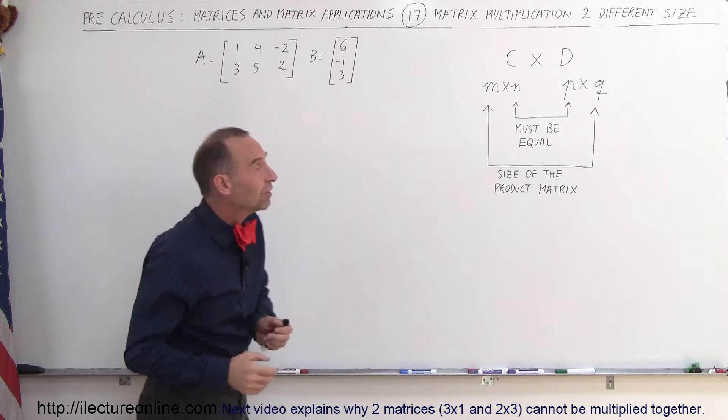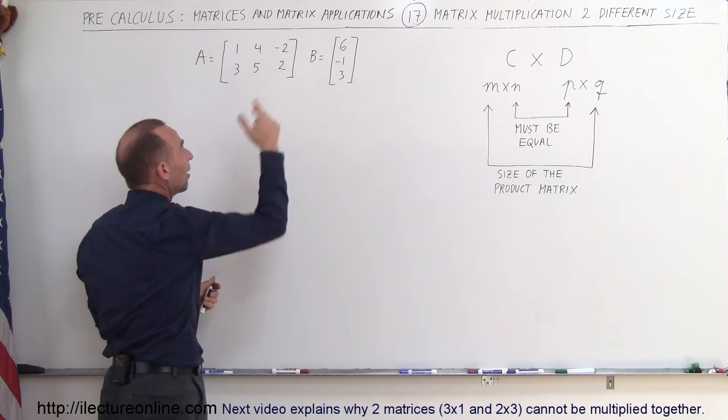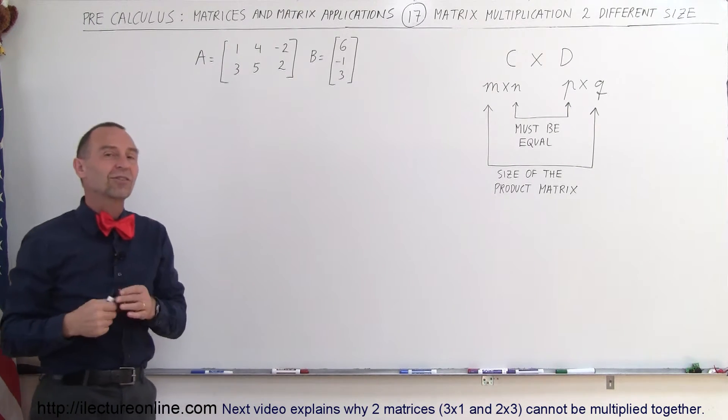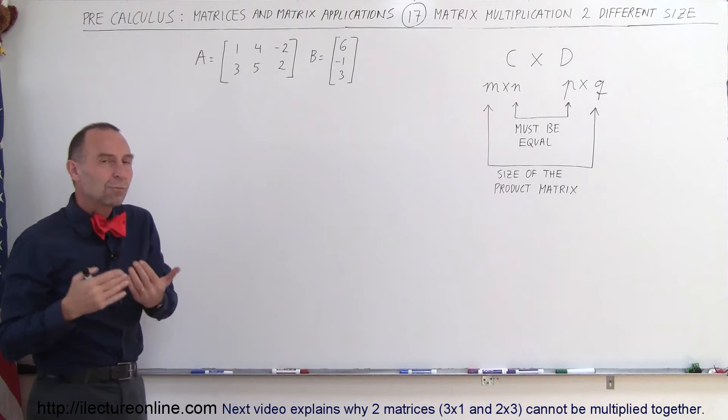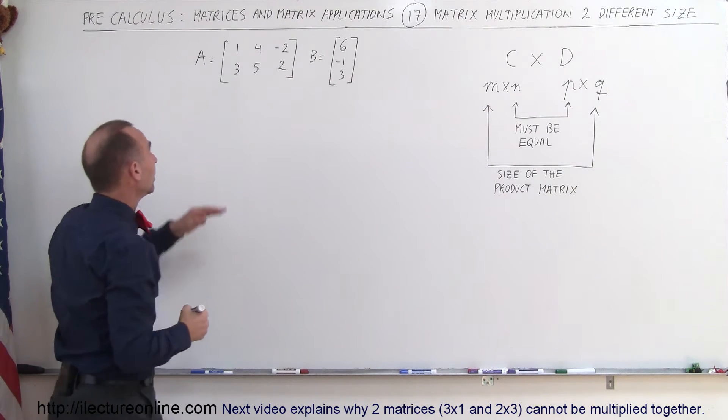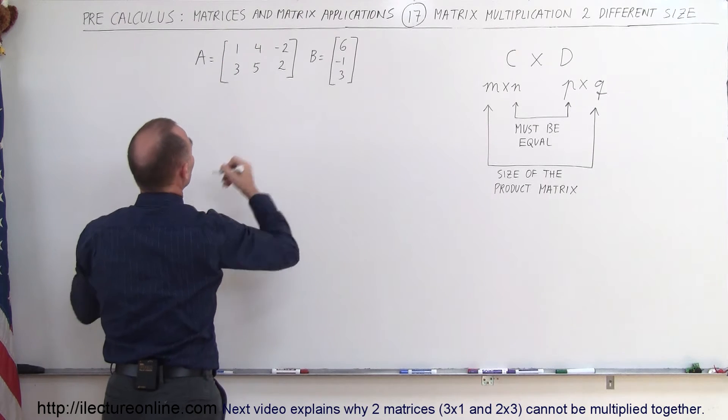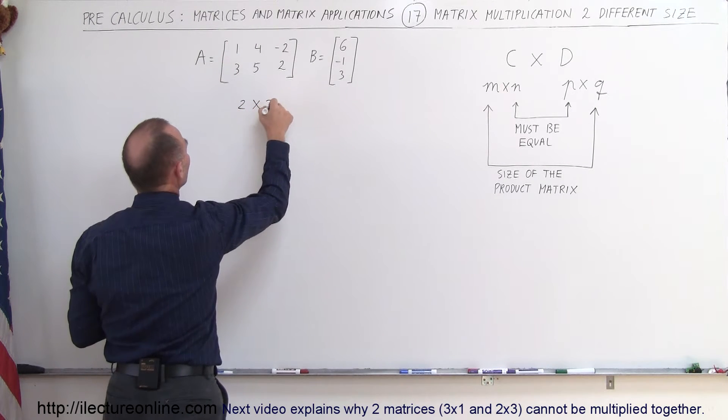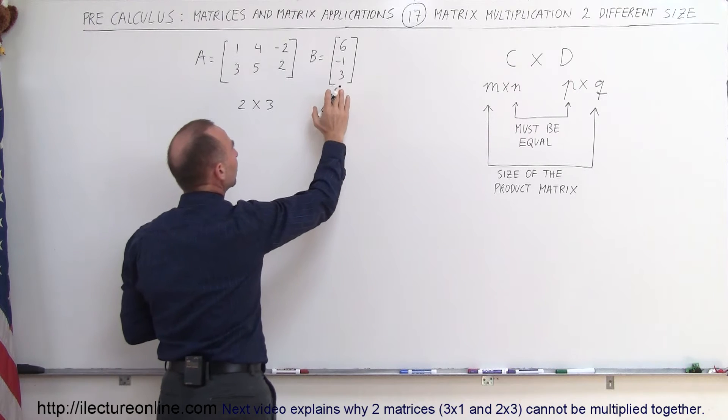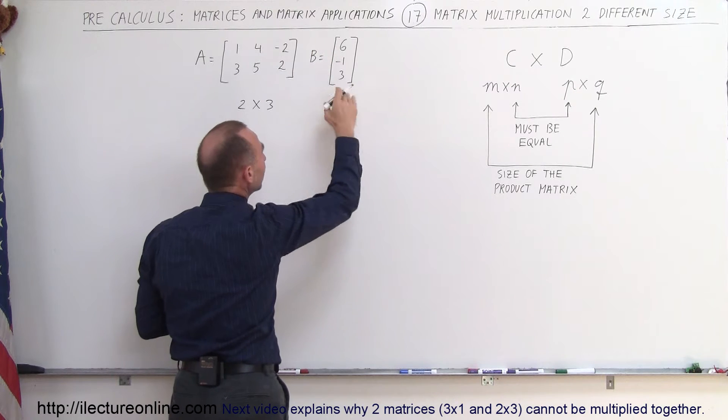So here we have two matrices, A and B, and they're obviously not square matrices, they don't have the same number of rows as columns. Can we multiply them together? Well, the dimensions of matrix A is two rows by three columns, so this is a two by three matrix. And the dimensions of matrix B is three rows and one column, so this is a three by one matrix.